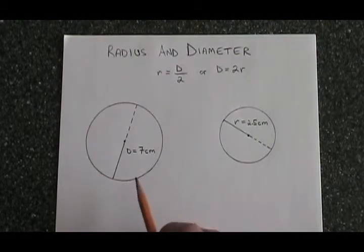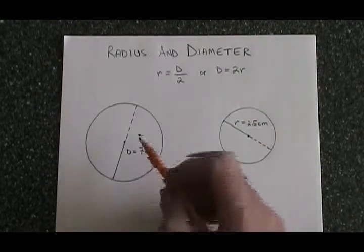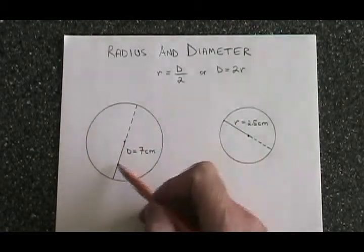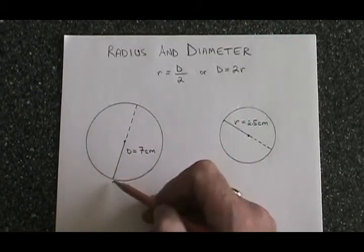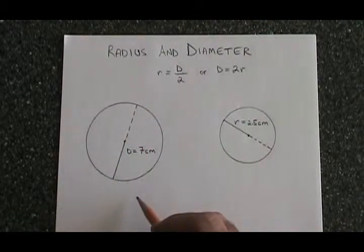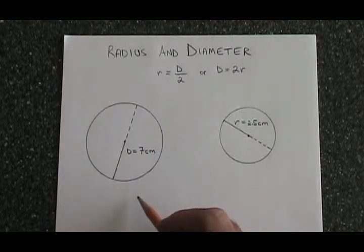The radius is always half as long as the diameter. This entire line here shows the diameter, but the solid part only is the radius. The radius is the distance from the center of the circle to anywhere on the outside edge.